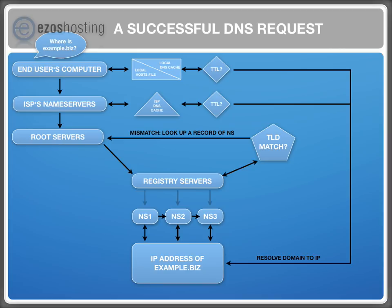You might wonder how the registry knows the correct name server. This information is stored by the registrar — that's why we usually ask you to update your name servers with them. Once you have updated the name servers, they will inform the registry servers. ISPs worldwide will eventually clear their DNS cache, as the authoritative name servers of a domain name are also cached. That's why it can take up to 72 hours for DNS changes to propagate around the world.